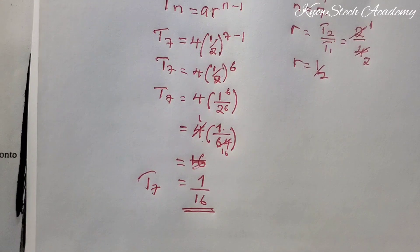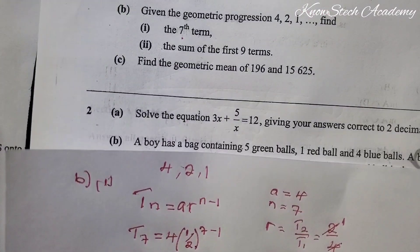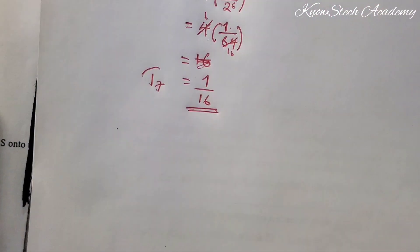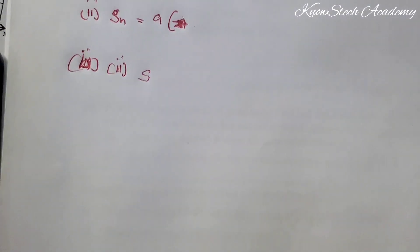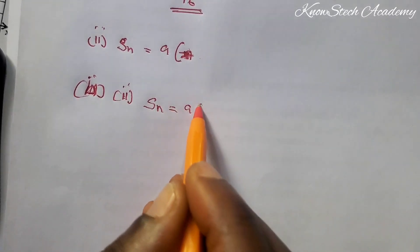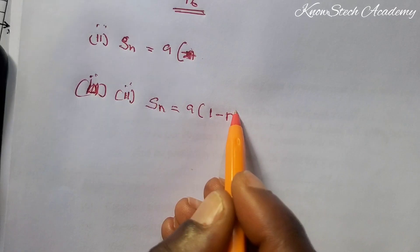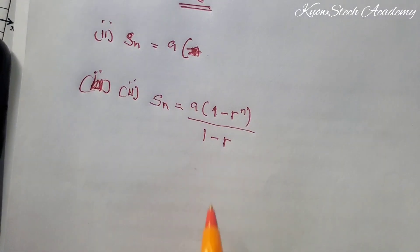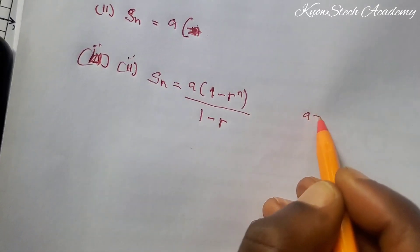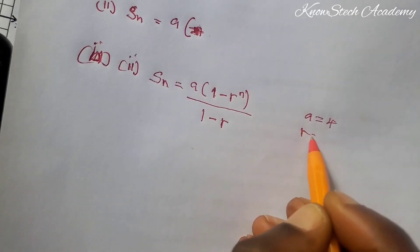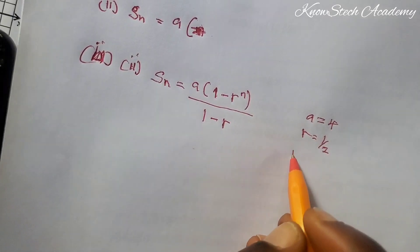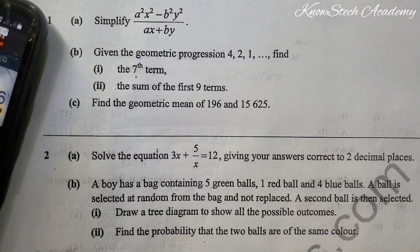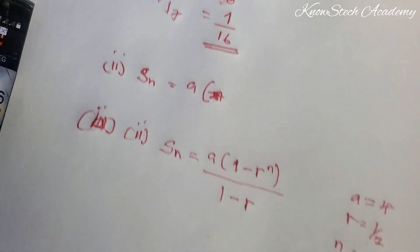Now let's go to the second question — question B2. We are asked to find the sum of the first 9 terms. The formula is: Sn equals a times (1 minus r to the power n), over (1 minus r). The value of a is 4, the common ratio r is 1/2 (already found), and n equals 9.